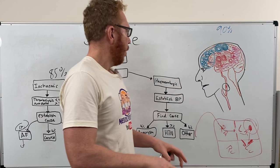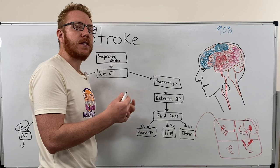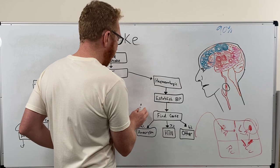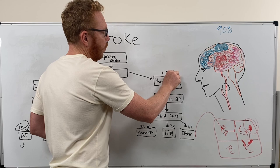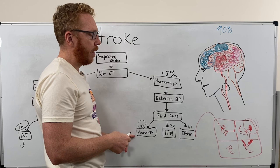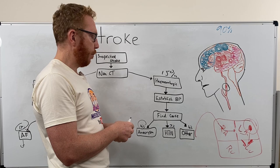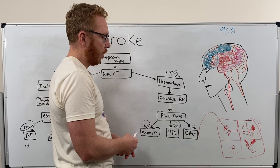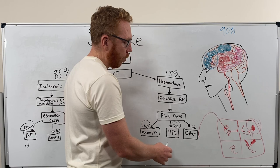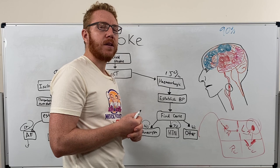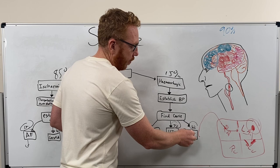Moving to haemorrhagic management, the first step is to establish blood pressure — systolic around 130 to 140 mmHg — and then establish the cause. Of the 15% of strokes that are haemorrhagic, 4% are from aneurysms, which would require neurosurgical review. Hypertensive causes account for 7%, managed through blood pressure control. Other causes — such as patients being on anticoagulants like warfarin or heparin — account for 4%, and these would need to be reduced.